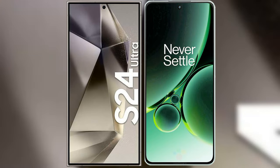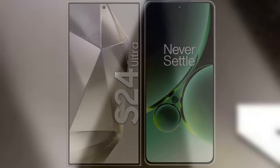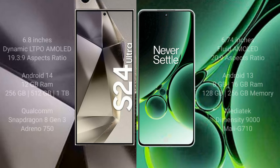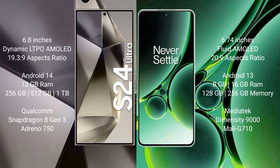I will compare the new Samsung Galaxy S24 Ultra with the OnePlus Nord 3. The Samsung Galaxy S24 Ultra comes with a 6.8-inch dynamic LTPO AMOLED display with an aspect ratio of 19.3:9. The OnePlus Nord 3 comes with a 6.74-inch flat AMOLED display with an aspect ratio of 20:9.